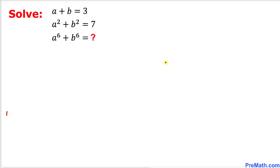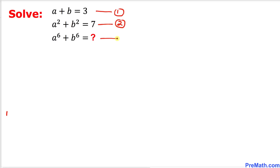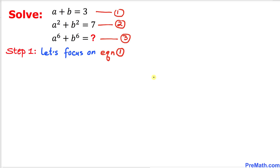Welcome to pre-math. In this video tutorial we are going to solve this given simultaneous equations: a plus b equals 3, a squared plus b squared equals 7. We want to find the value of a to the power 6 plus b to the power 6. Let's get started. I'll call these equation one, equation two, and equation three respectively.